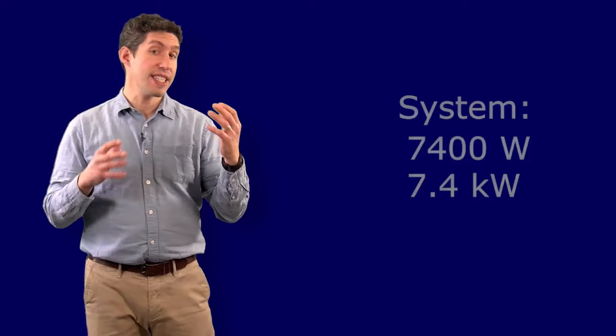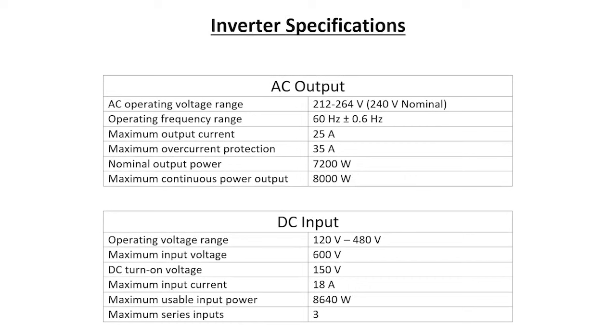Let's begin by looking at an example where we need a 7400 watt or 7.4 kilowatt system and then choose a module and an inverter that matches this requirement.